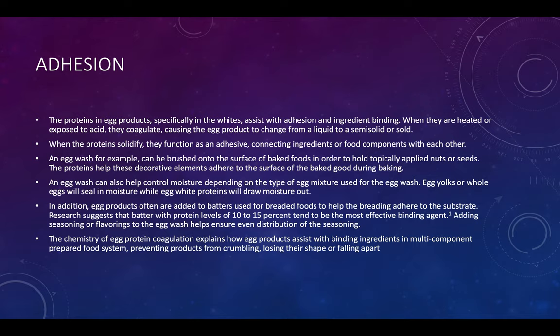An egg wash, for example, can be brushed onto the surface of baked foods in order to hold topically applied nuts or seeds. The proteins help these decorative elements adhere to the surface during baking. Egg wash can also help control moisture: egg yolks or whole eggs will seal in moisture, while egg white protein will draw the moisture out.